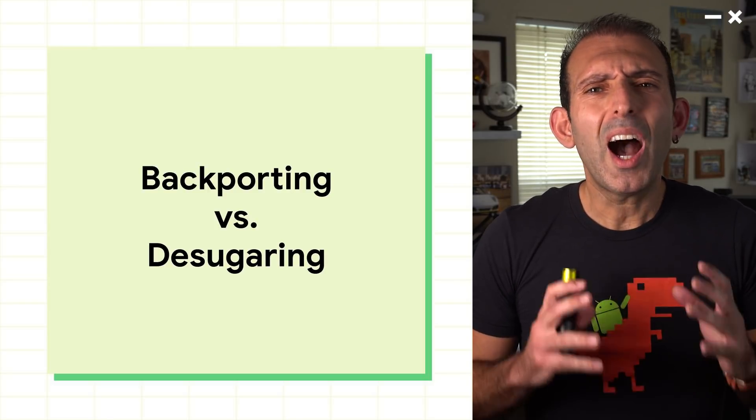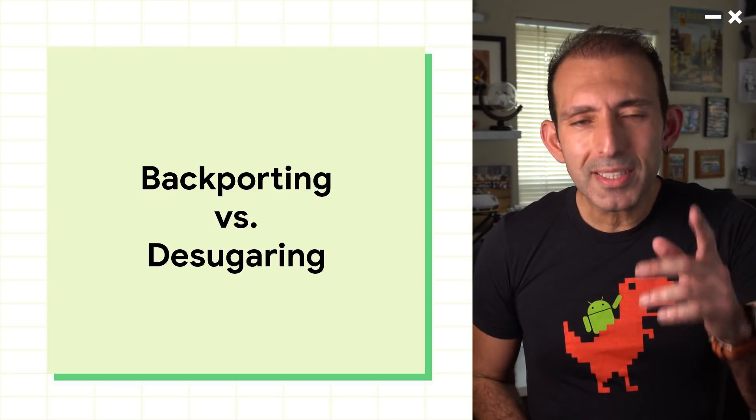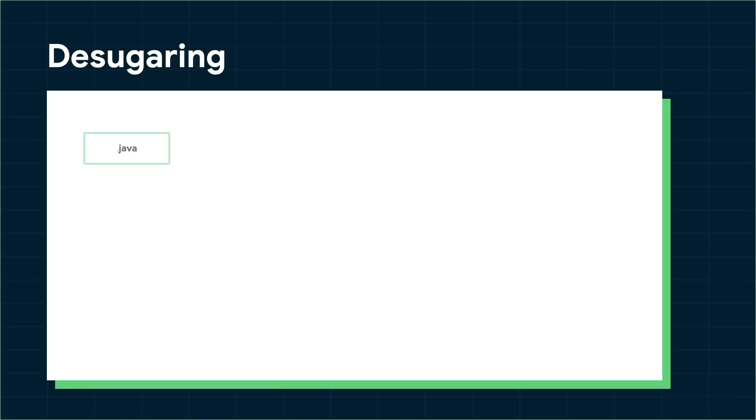If you are wondering how that's even possible, let's take a look at desugaring. The Android Gradle plugin 4.0 provides built-in support for using certain Java language APIs and third parties that use them. Previously, these APIs were only supported on newer Android versions, but with AGP 4.0, they are now supported on nearly all Android versions. This support is possible with a trick called desugaring, which is performed by D8 and R8.